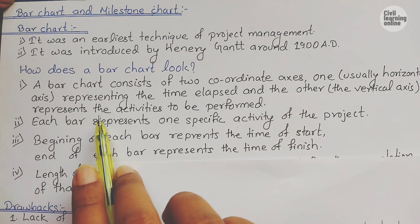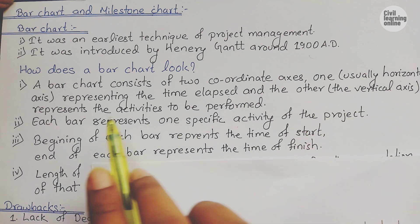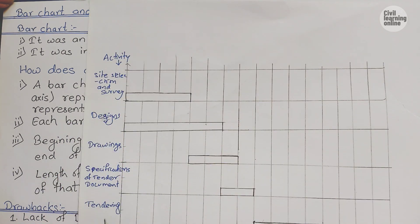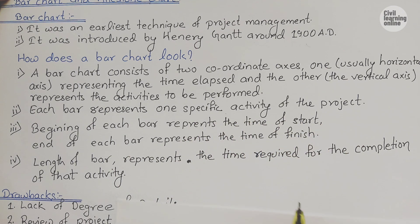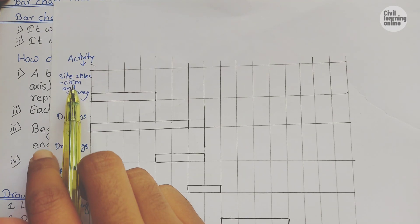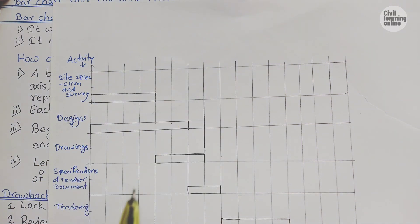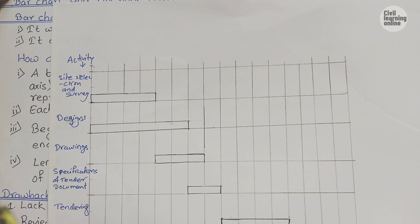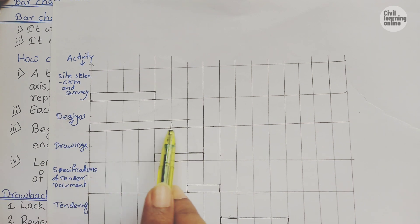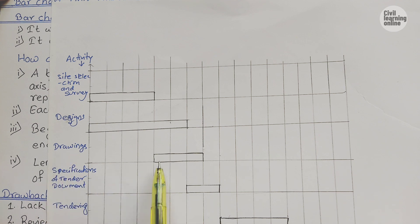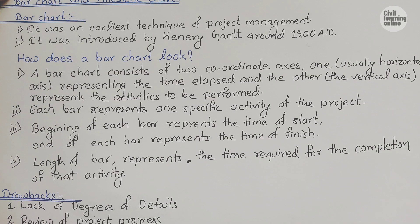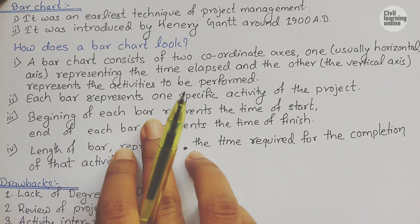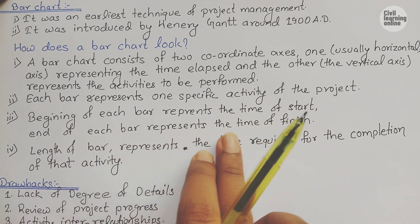The vertical axis represents the activities to be performed. The vertical axis shows which activities are to be performed to complete a project. Each bar represents one specific activity of a project. For example, site selection and survey is one activity represented by one bar. Similarly, design has a different bar, and drawing has another bar — each bar varies with the period of starting and ending. The beginning of each bar represents the time of start, and the end of each bar represents the time of finish.